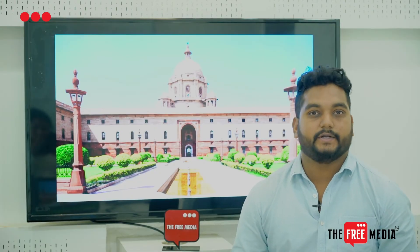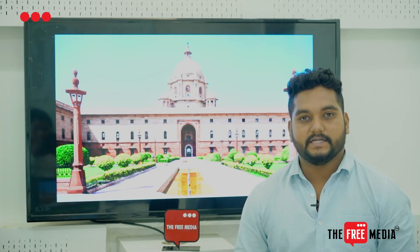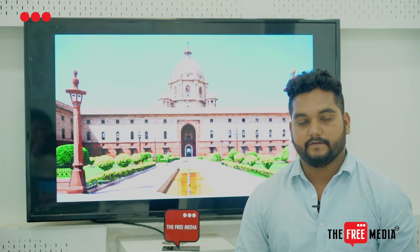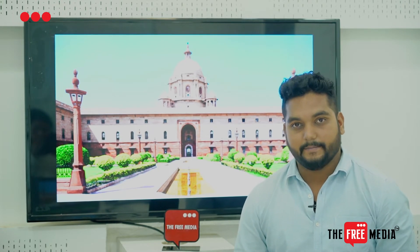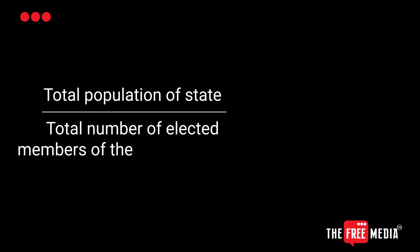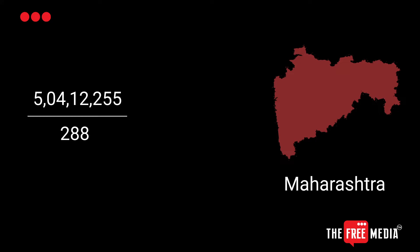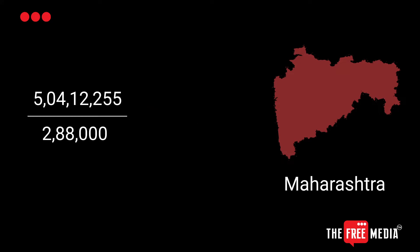But the process is not that simple — all the voters don't have the same vote value. Although MPs have a fixed value of around 705, in the case of MLAs there is a formula: the population of the state divided by the number of seats, divided by 1000. For example, Maharashtra's population is around 54,12,255. If we divide it by 2,88,000, the outcome is 175, which is the vote count of a single MLA of Maharashtra.